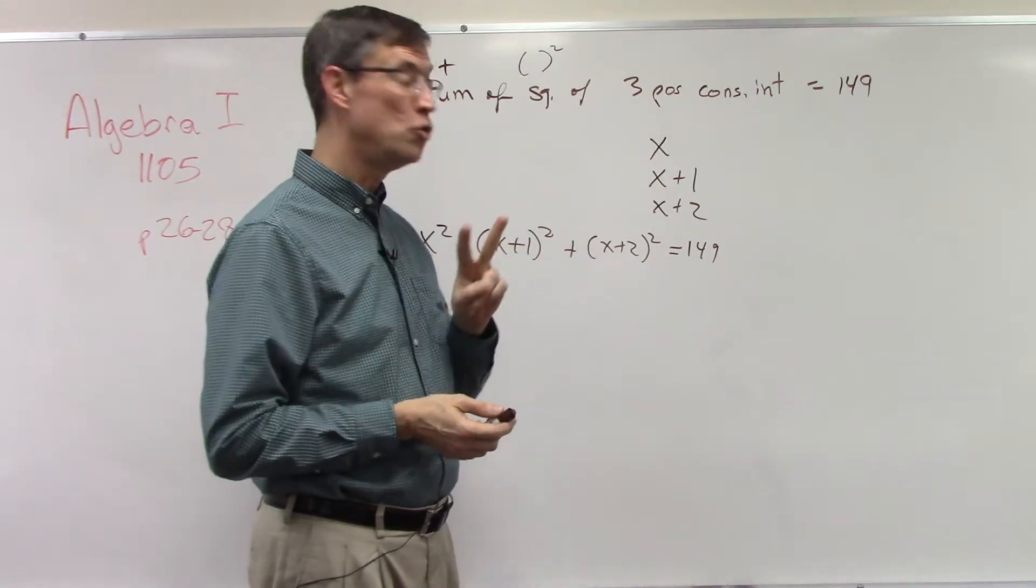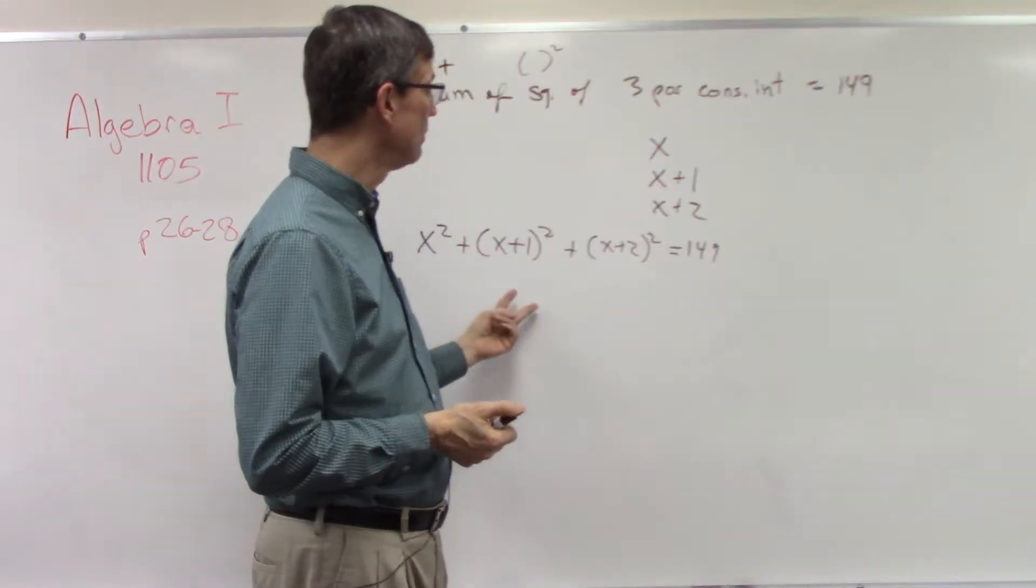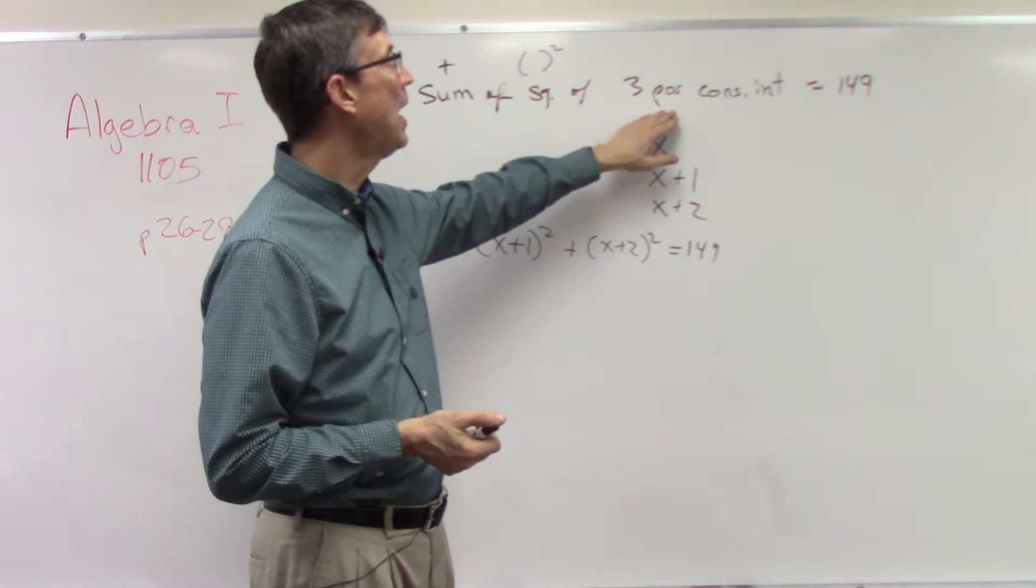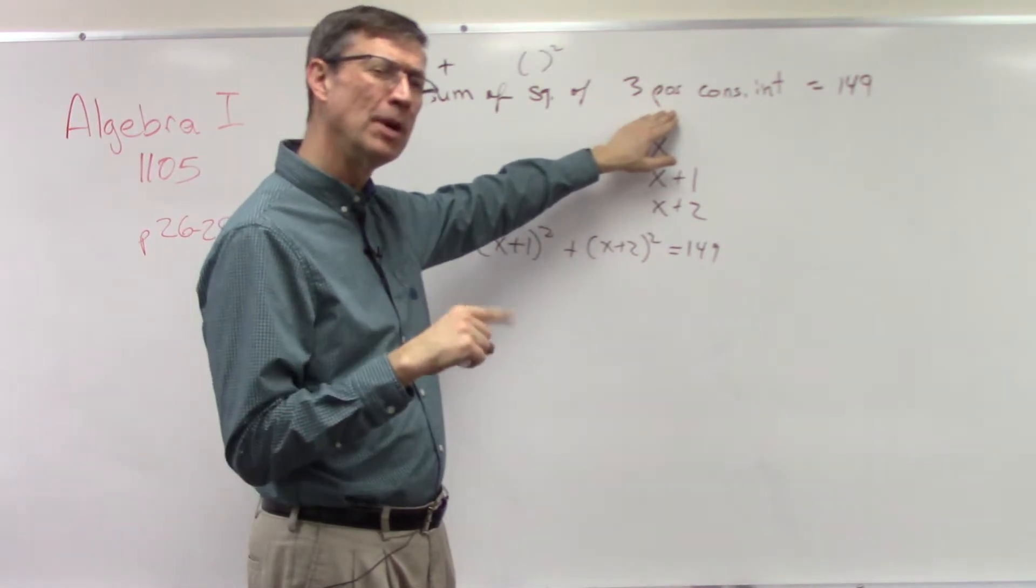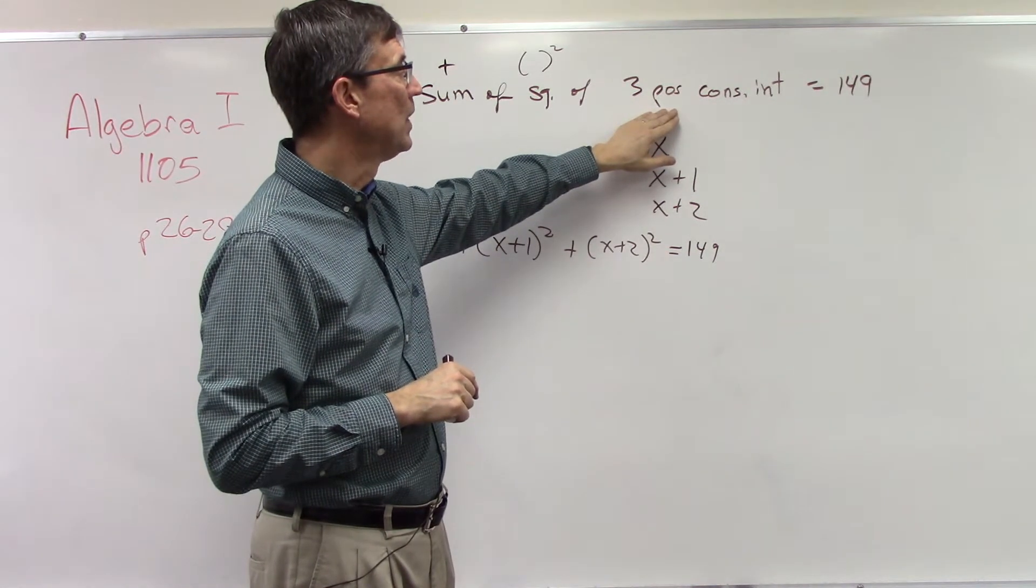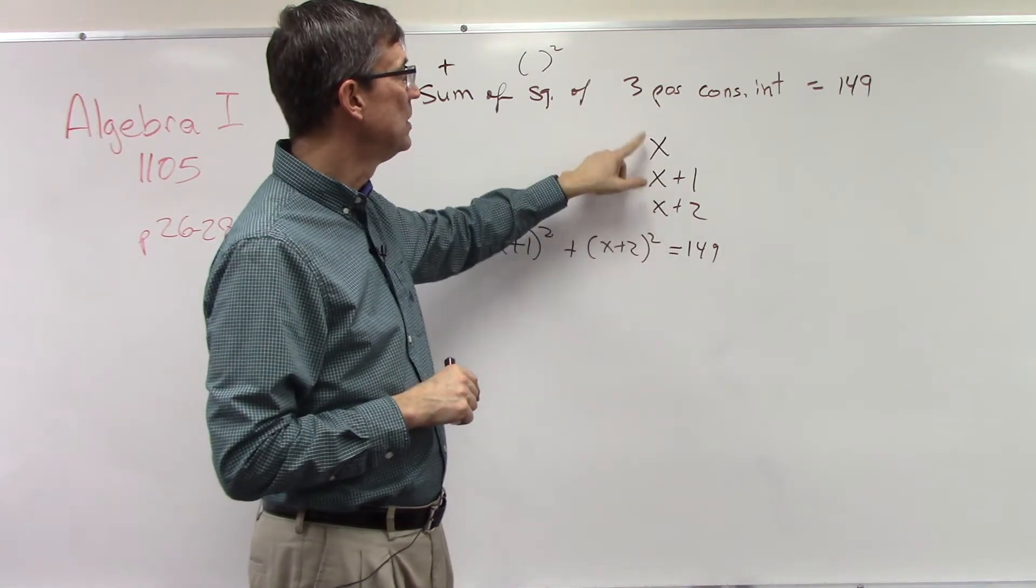Plug into that and you will get two numbers, and those will be the starting points. But you need to choose the positive integer. If you get a negative number and a positive, choose the positive integer, and then your actual answer is that number and the next number and the next number.